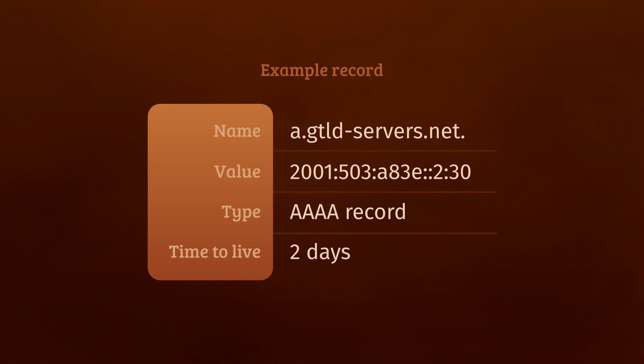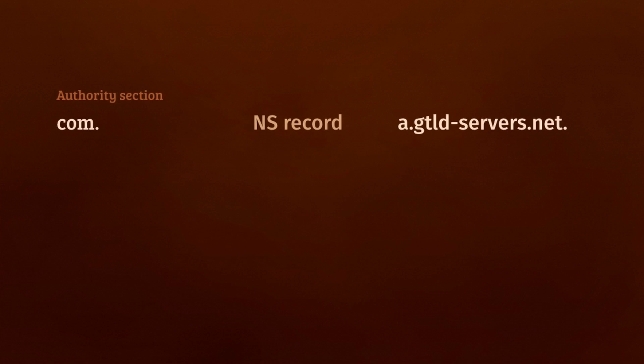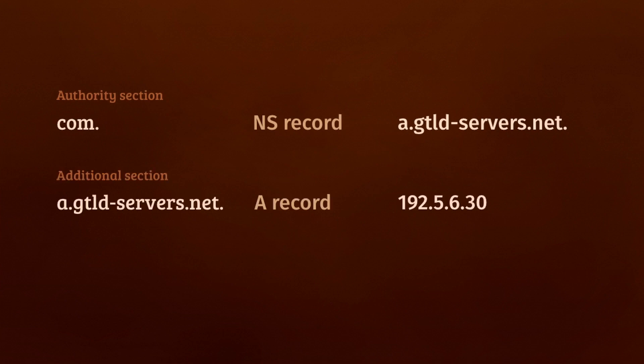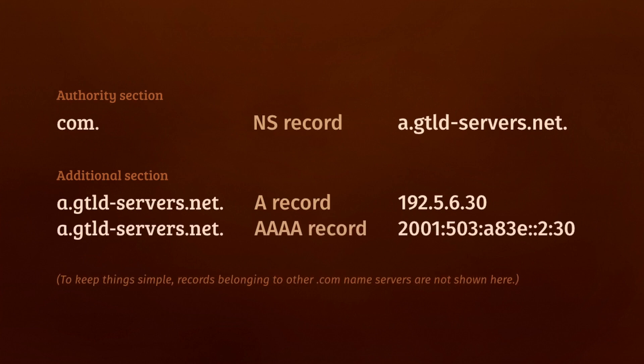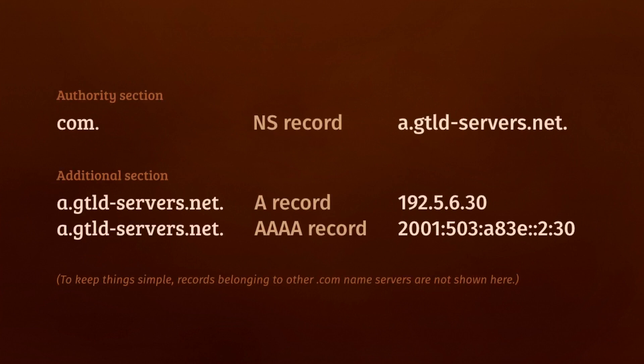In one DNS message, the root name server can tell us that a.gtldservers.net can help you find things in the .com zone, and that this name server is located at this IPv4 address, as well as this IPv6 address. We've figured out where to reach the .com name server.